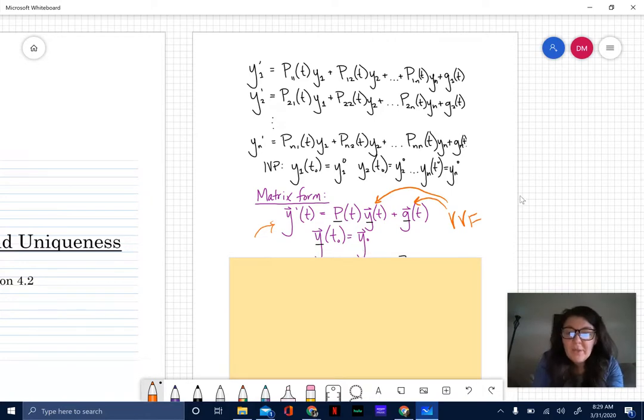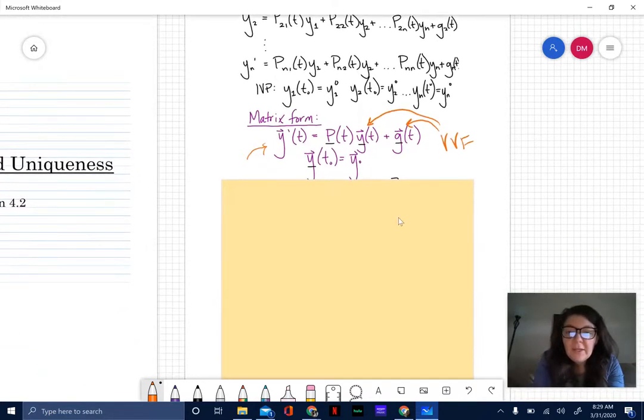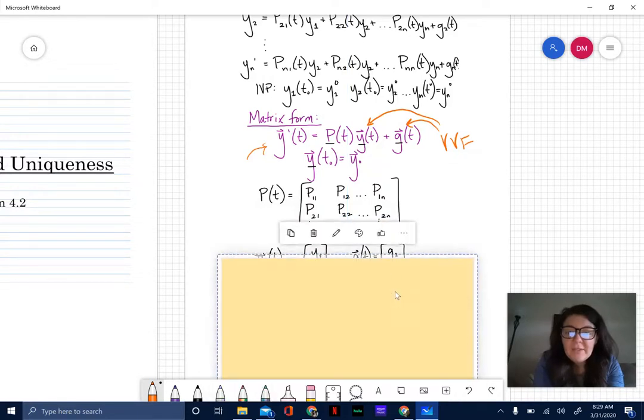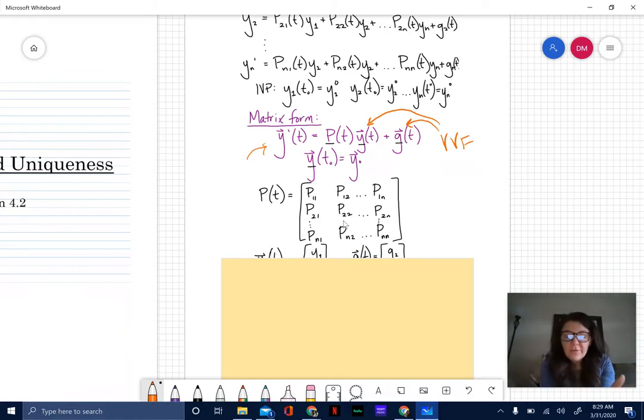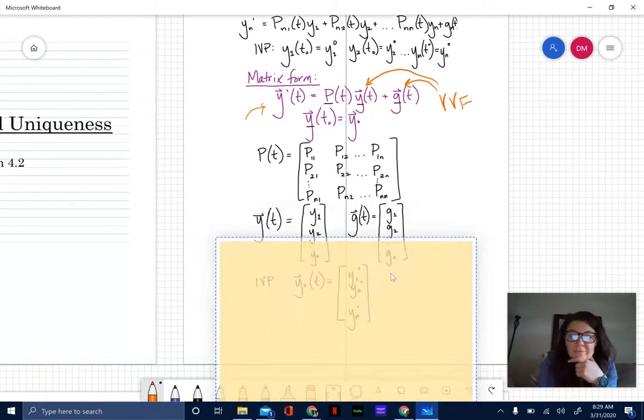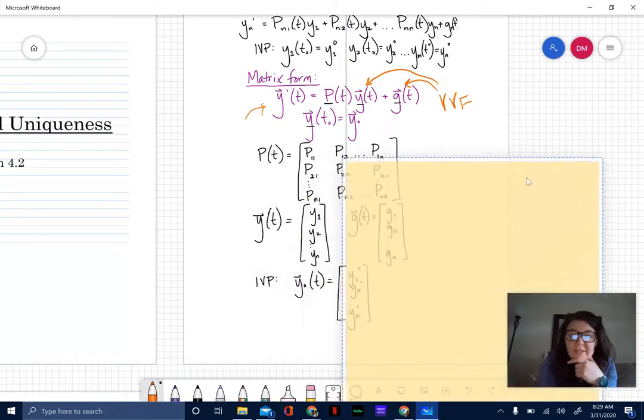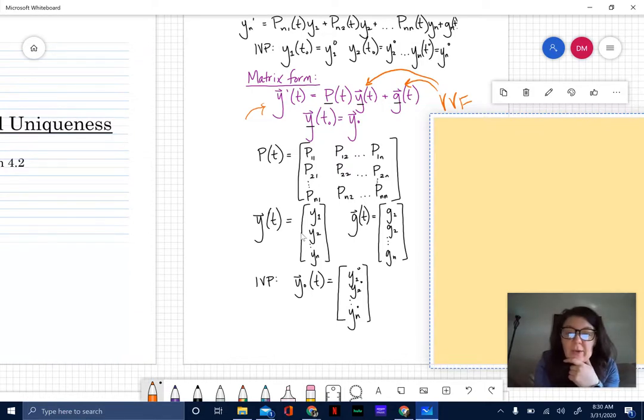What that's going to look like in terms of P(t) is this is going to be essentially our coefficient matrix. These could be coefficients like just plain old numbers or they could be coefficients that are in fact functions of t. This matrix is going to be n by n - that's your P(t) matrix.